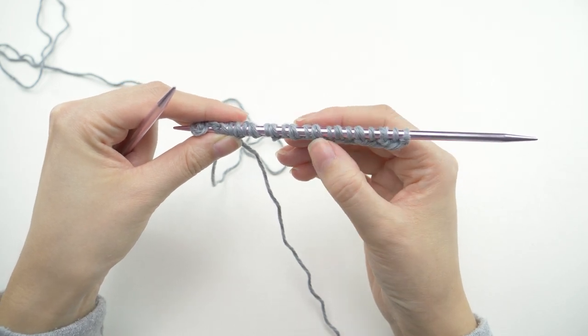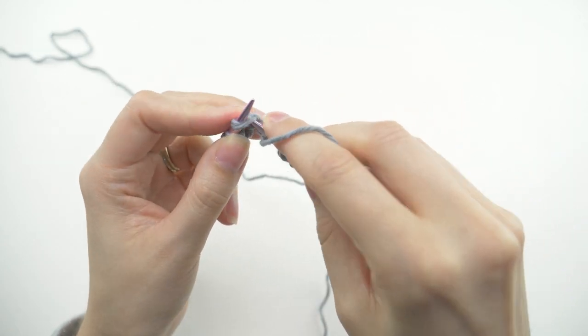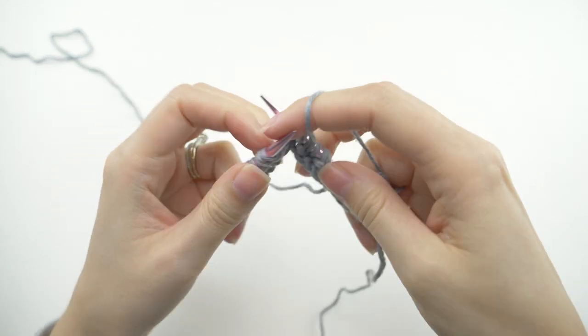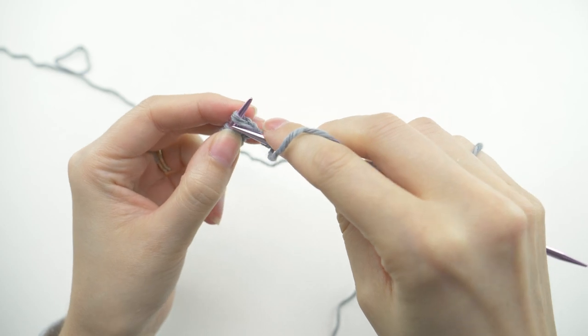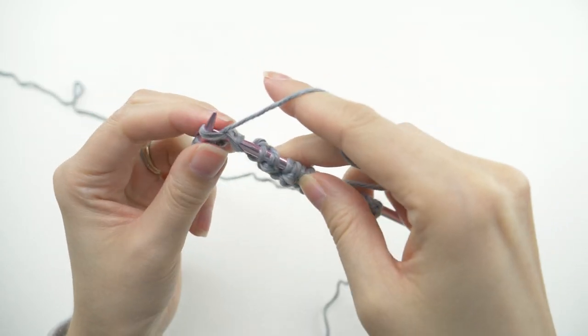By the way, try to say brioche stitch together? I'm finding it really difficult. Okay, so rows 2 and 3 make up the repeat for this pattern. Super simple, right?